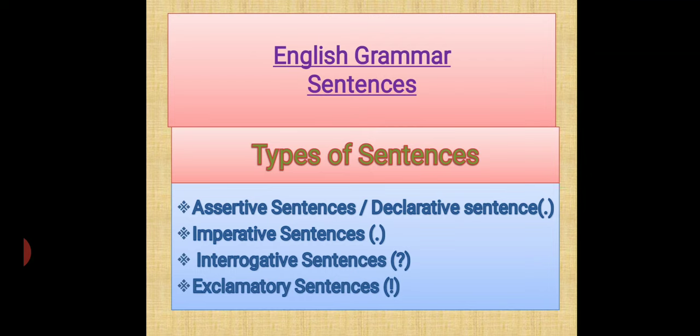Next is our imperative sentences. They start with a capital letter and end with a full stop. In imperative sentences, we find a person giving a command, order, request, advice, or suggestion. So whenever we find all these types of feelings or expressions in a sentence, then this becomes your imperative sentence.